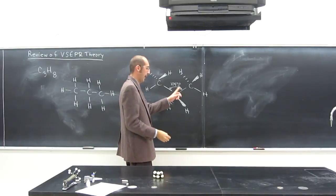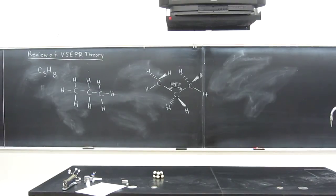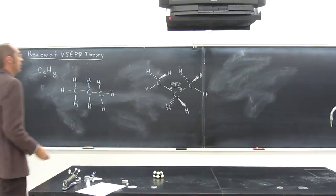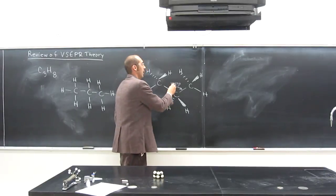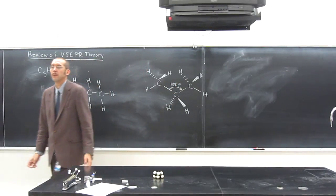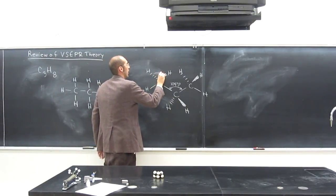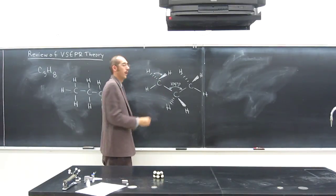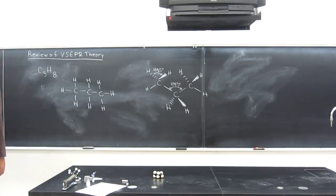109.5. Whenever you see an atom, and as far as you guys are concerned, whenever you see an atom that's surrounded by four bonds and no lone pairs, I want you to think of it as 109.5. That's all I want you to remember for that type of arrangement. Is everybody okay with this one? What if I asked you, what's the bond angle between those two hydrogen atoms? 109.5. In fact, all the bond angles in this molecule are 109.5.